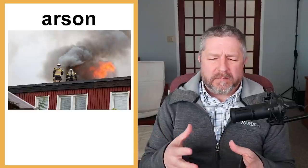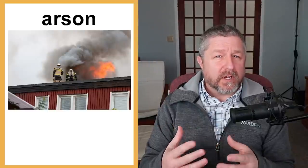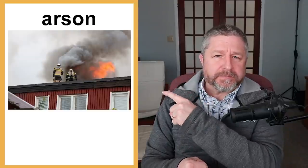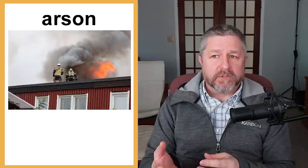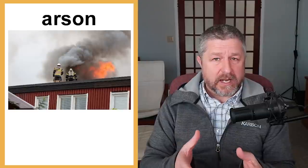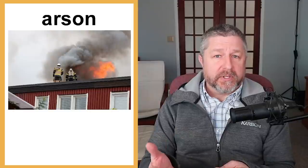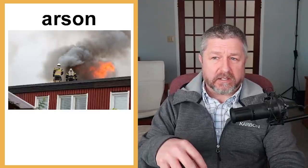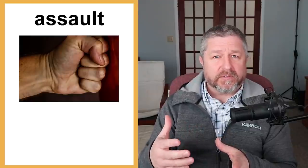Now let's talk about different types of crime. Arson is when someone lights a building on fire on purpose — not an accident. Someone who commits arson is called an arsonist. Assault is any time someone physically hits someone else. An assault is when you punch, hit, or kick someone — any time you physically attack someone, we call it assault.